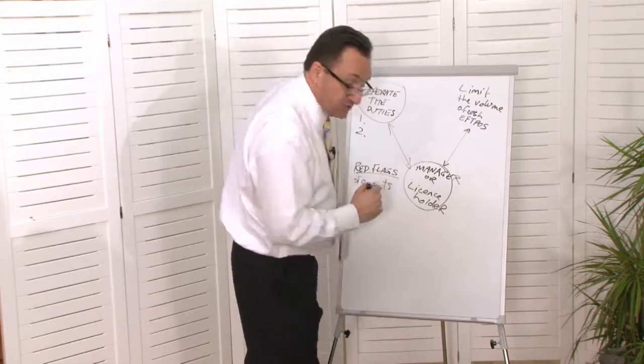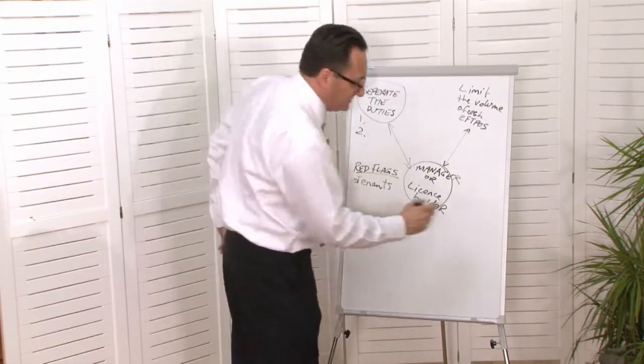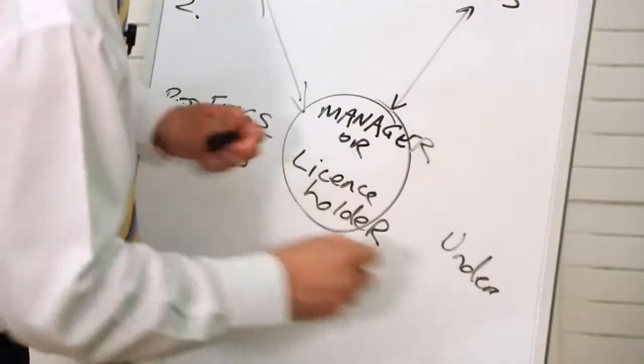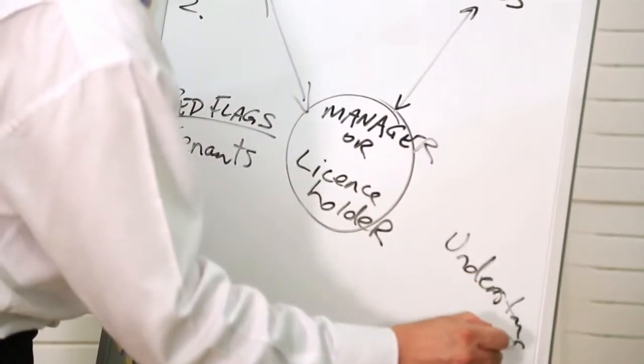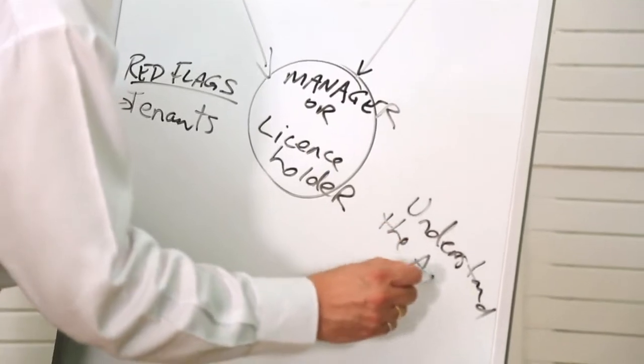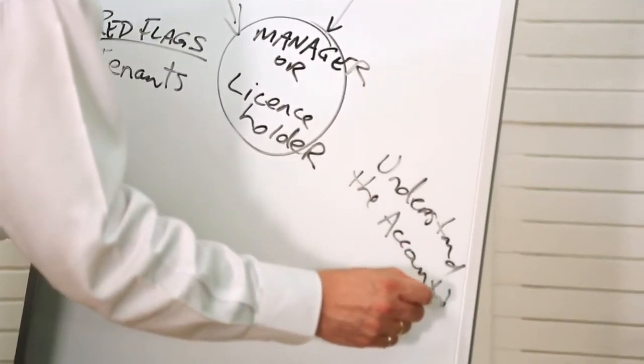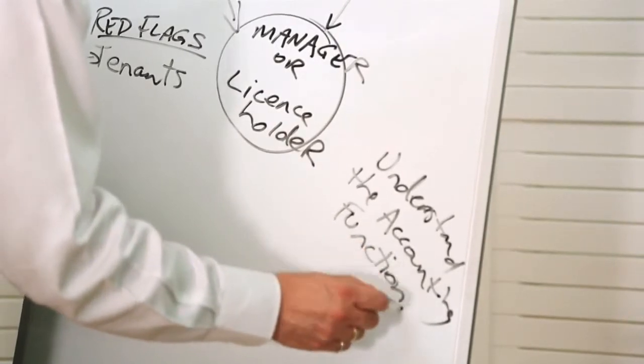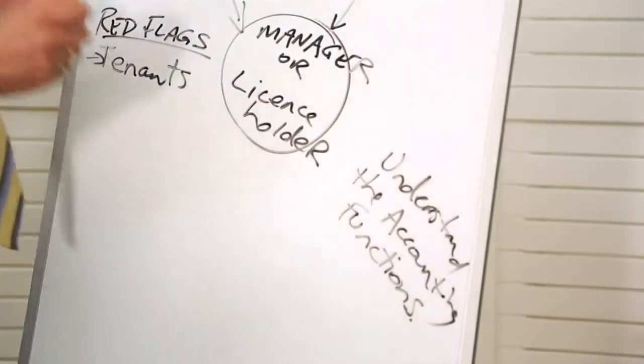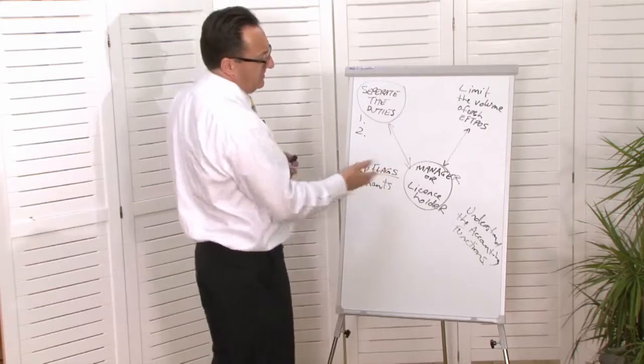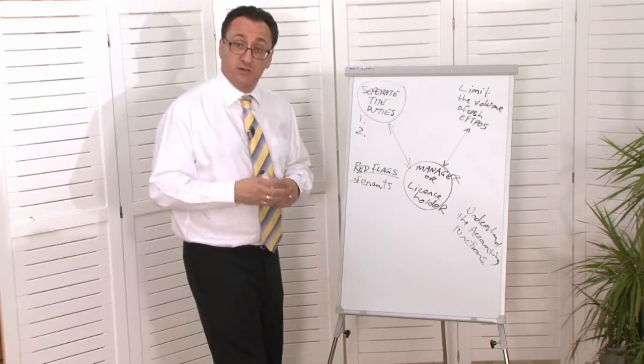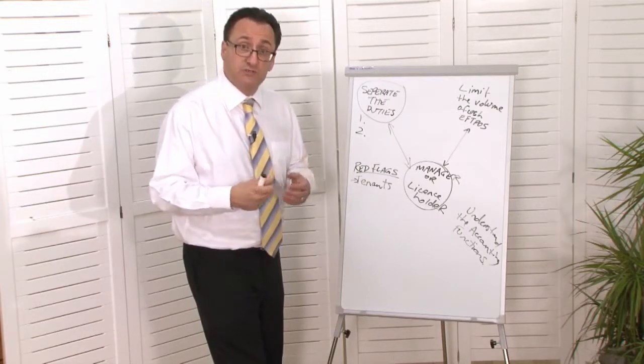Something else that you should be wary of here is the manager should understand the accounting function. Now this is probably one of the hardest areas, because most managers or license holders may be too busy, particularly if it's a selling license holder. The license holder is a salesperson.